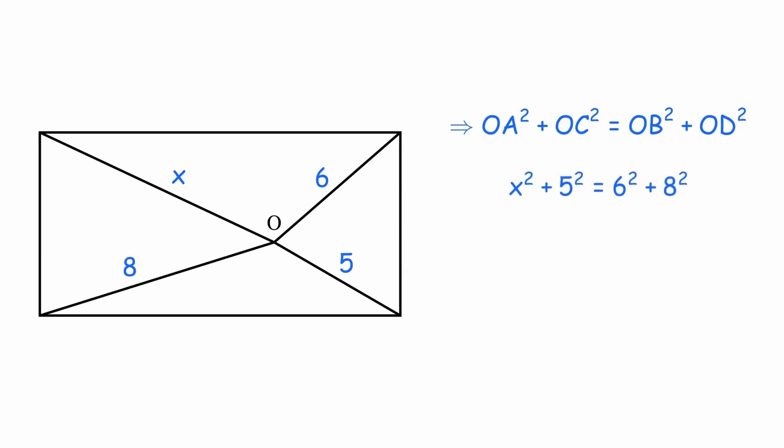Now we can just put the values in the relation and obtain X squared equals 75. Thus, X is nothing but 5 root 3.